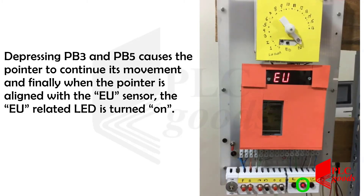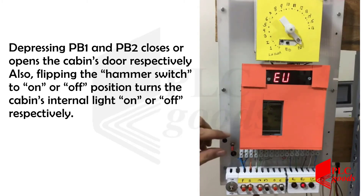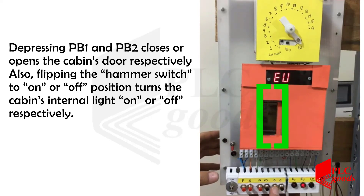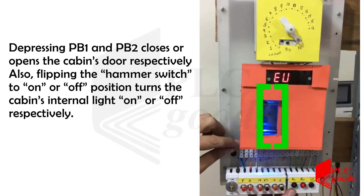Finally, when the pointer is aligned with the EU sensor, the EU-related LED is turned on. Depressing either PB1 or PB2 closes or opens the cabin's door respectively. Flipping the hammer switch to the on or off position turns the cabin's internal light on or off respectively.